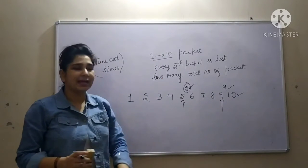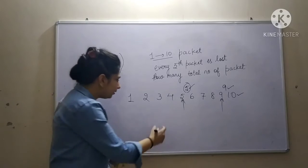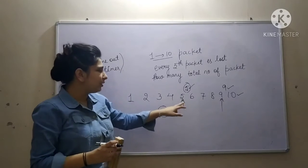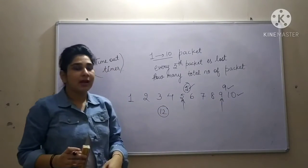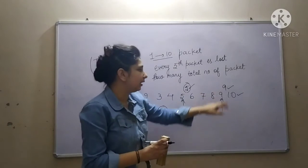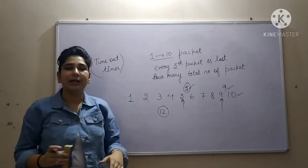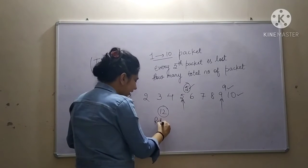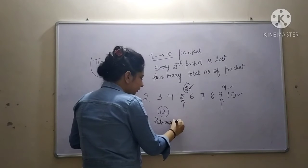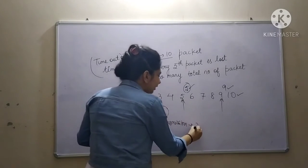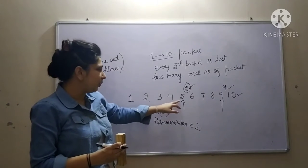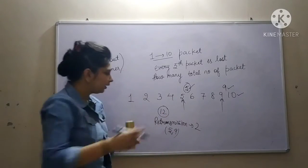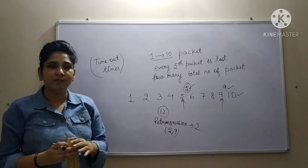So how many packets are you transmitting on the channel in total? The original number is 10 packets, but out of those, 2 packets were lost and had to be retransmitted. We are doing 2 retransmissions — packets 5 and 9. This is how we solve this kind of problem.